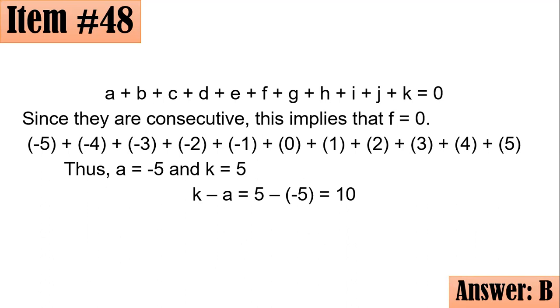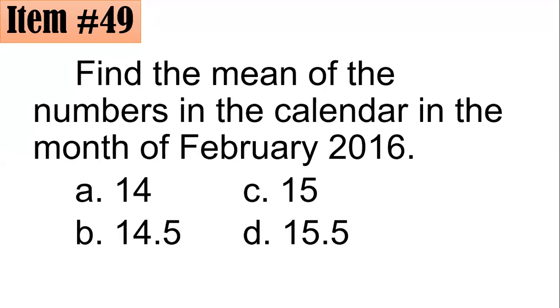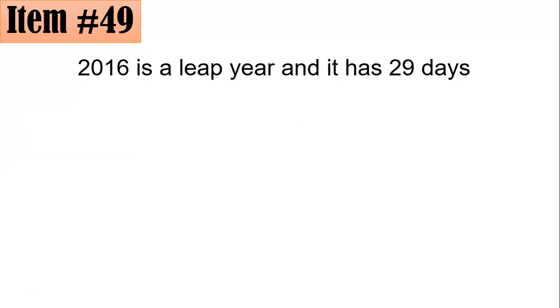Item 49, find the mean of the numbers in the calendar in the month of February 2016. Is it 14, 14.5, 15, or 15.5? When I say month of February 2016, I'm just referring only to the numbers, the 1, 2, 3, until the last number. We do not include the 2016. We do not indicate the time or anything. It's just that the numbers, 1, 2, 3, all the way until 29. How come 29? How come not 28? Because 2016 is a leap year, and it has 29 days for sure.